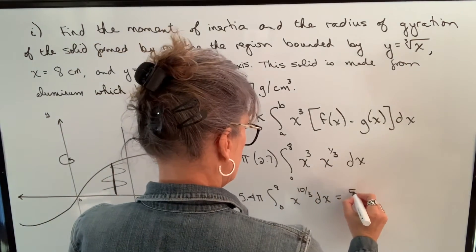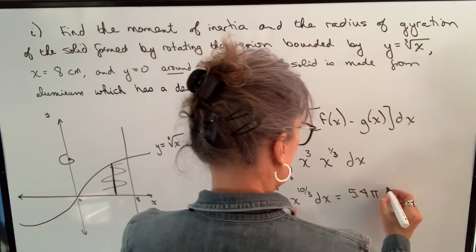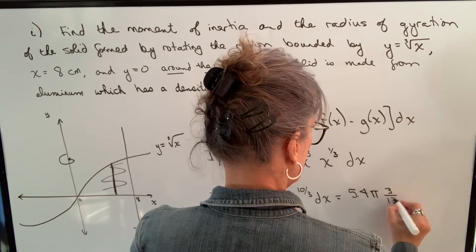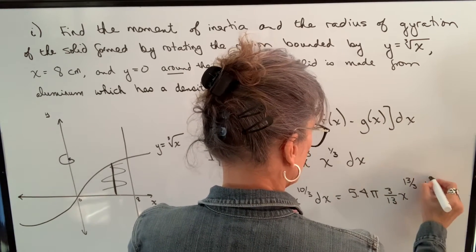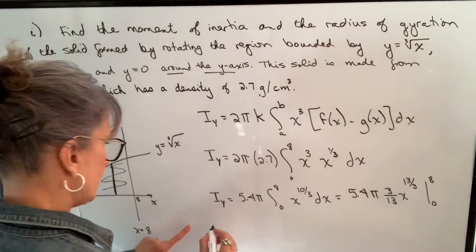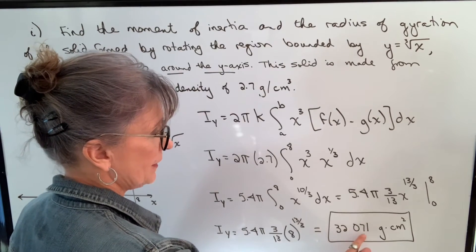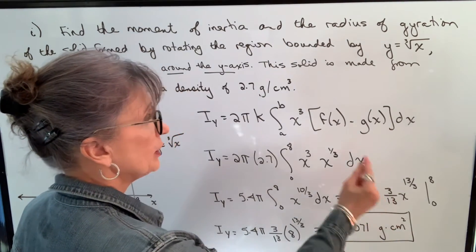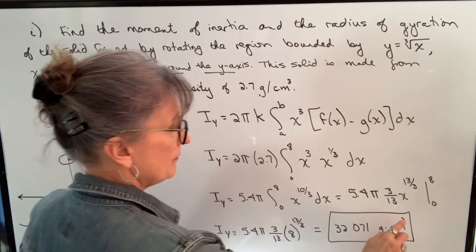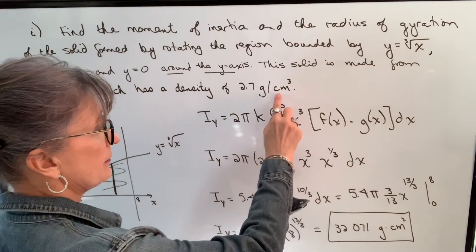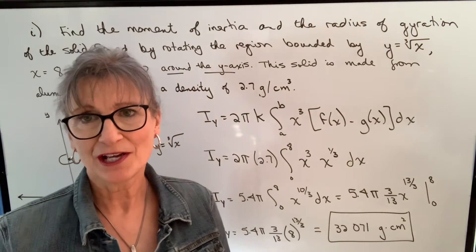Let's integrate it. The integral of x to the 10/3 will be 3/13 times x to the 13/3. Now we're going to evaluate it. When I plug this into my calculator, I get a value of 32,071. The unit for mass is grams and the unit for distance is centimeters, so it'll be square centimeters. So that's the moment of inertia with respect to the y-axis.